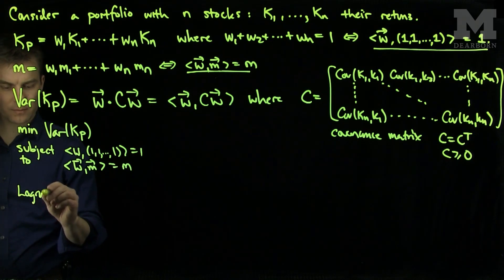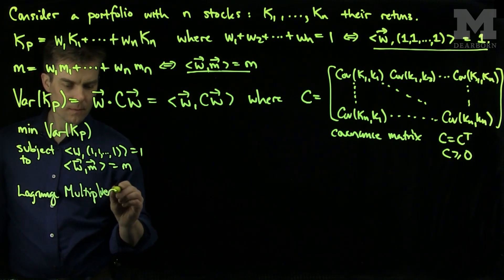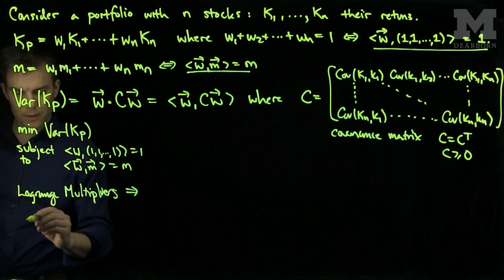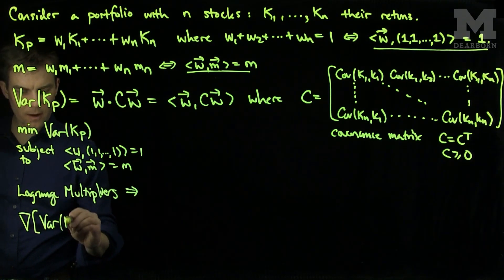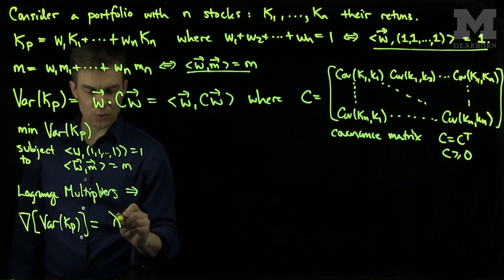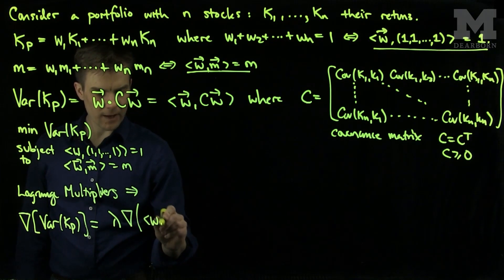Lagrange multipliers imply that the gradient of the variance of Kp is proportional to a linear combination of the gradient of my constraints.